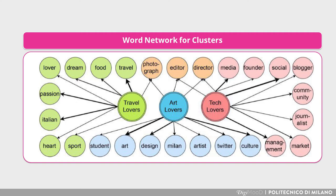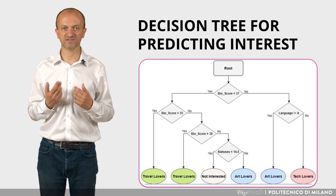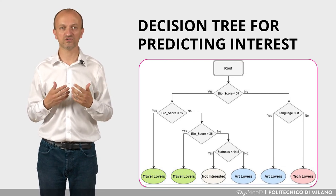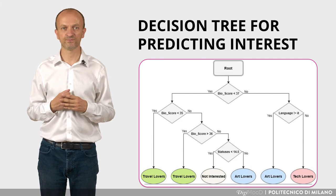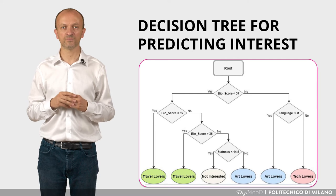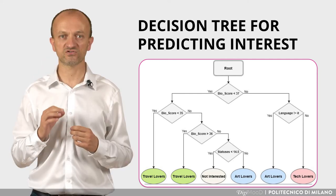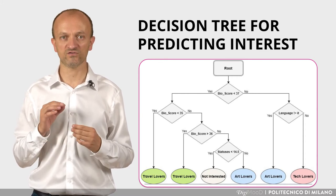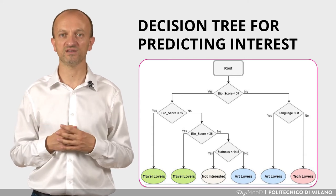This is evident also in the second graph, showing the most frequent words used by users in the respective clusters — words map very well to the categories of users. Based on this analysis, we can also build classifiers to predict the category of interest of additional users based on their features. In this case, we used a technique called decision tree to categorize users. This is extremely valuable for targeted marketing initiatives, where we can advertise events in a personalized way based on interest.